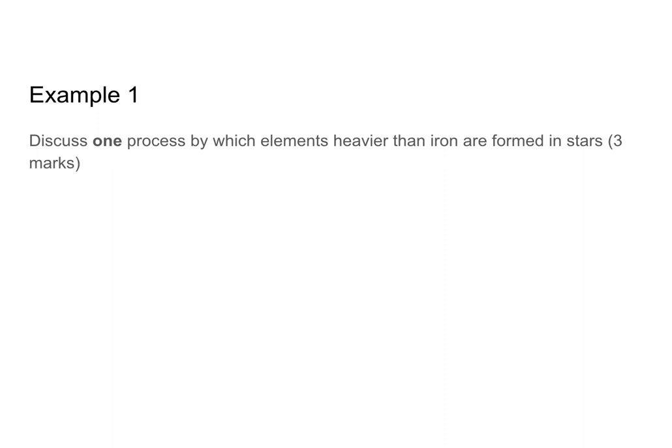Let's do an example question. You are asked to discuss one process by which elements heavier than iron are formed in stars. This is a three-mark question, so you're expected to make three points. Note this asks for one process — we have learned two, the S and the R process. Pick the one you like better and describe how elements heavier than iron are formed in that process. Pause the video, answer the question, and prepare your different colored pens for us to go through the mark scheme together.